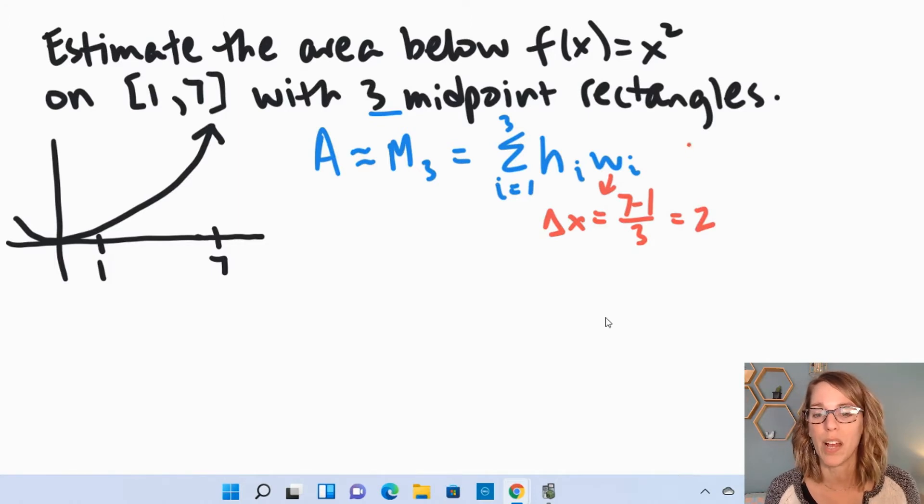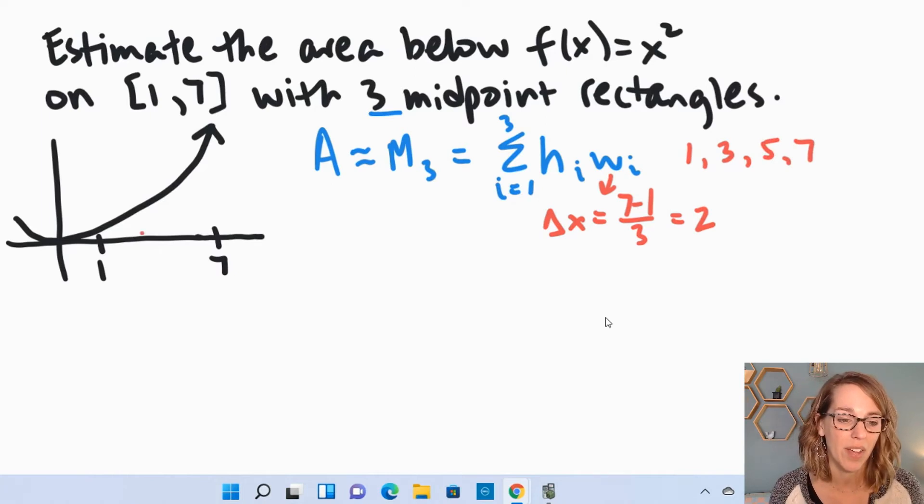So as I'm looking at my interval, I'm going to go 1, and then the next endpoint for a rectangle is going to be plus 2, so that's going to be 3. The next endpoint, when I add 2 again, is going to be 5, and that last endpoint is 7. So I've got these endpoints, 3 and 5.